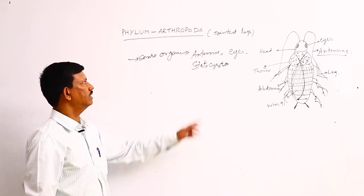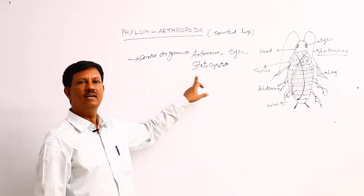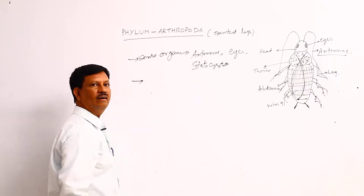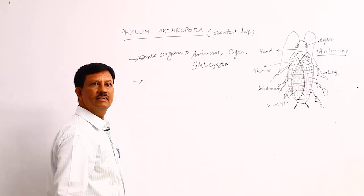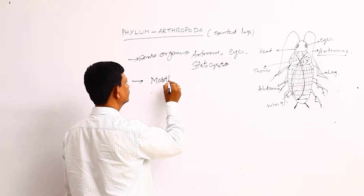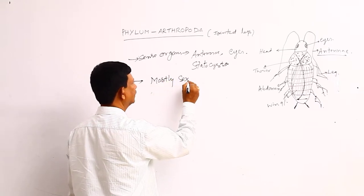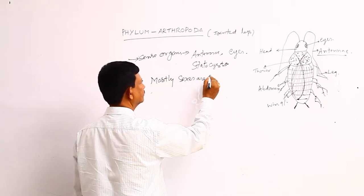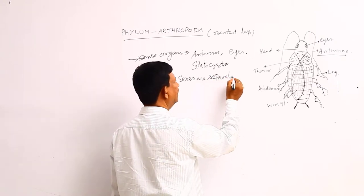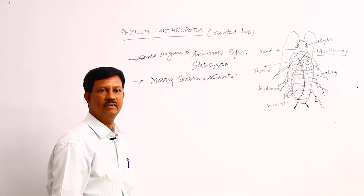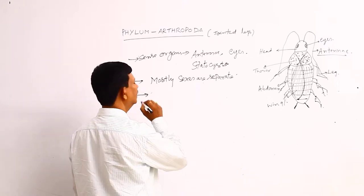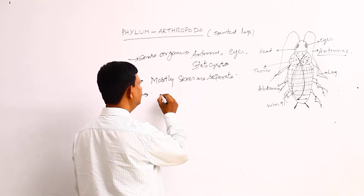These are the different types of sense organs — antennae, eyes, statocysts, etc. — present in this phylum. They are mostly unisexual; sexes are separate, male and female animals are separate. A few are hermaphroditic.